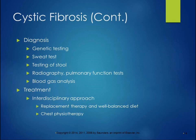Diagnosis involves the sweat test for electrolytes, testing stool for enzymes, radiography and pulmonary function tests, and blood gas analysis. Treatment is an interdisciplinary approach including enzyme replacement therapy and a well-balanced diet. Chest physical therapy — including postural drainage, which students will learn in their special topics class — is important to avoid buildup of excessive mucus. Parents are taught postural drainage techniques, and in PT, activities like jumping and trampoline work can help break up mucus. There's also a vest that vibrates the patient to loosen mucus in the lungs.